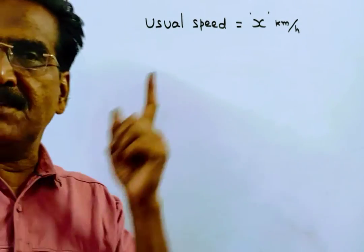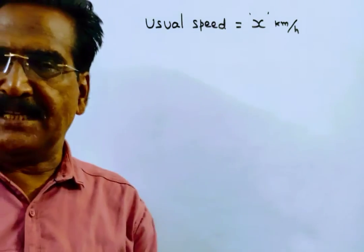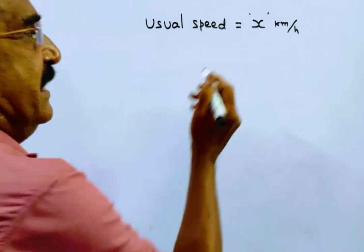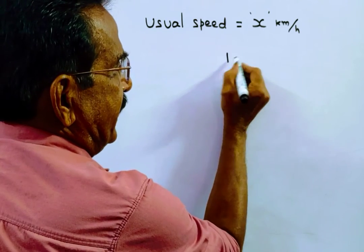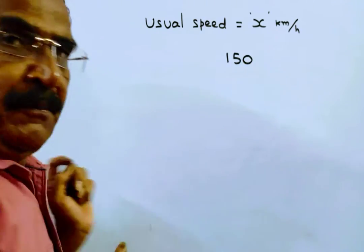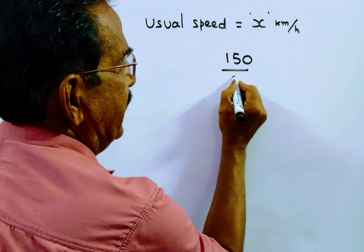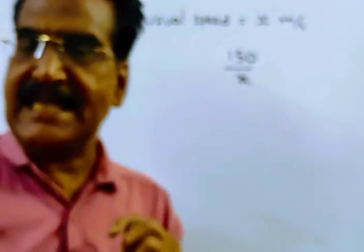Say the usual speed of Achille is x km/h. The time taken to travel 150 km with usual speed is 150/x hours.